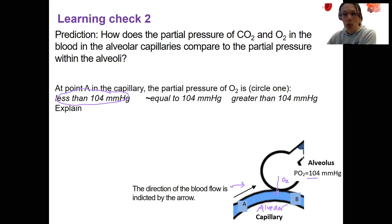Partial pressure gradients are what allow for gas diffusion. So the blood coming before it gets to the alveolus is going to be lower, maybe 40. We'll come back to that number.